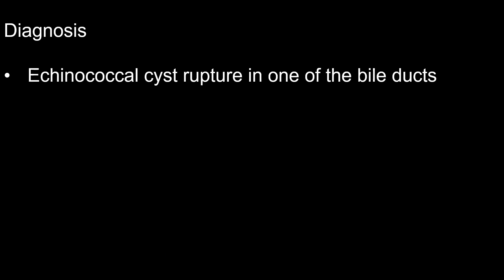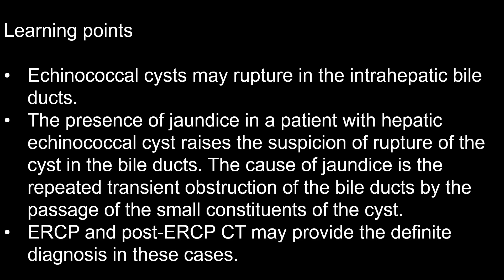The diagnosis is echinococcal cyst rupture into the bile ducts. The learning points are: echinococcal cysts may rupture into the intrahepatic bile ducts; the presence of jaundice in a patient with a hepatic echinococcal cyst raises the suspicion of rupture into the bile ducts; the cause of jaundice is the repeated transient obstruction by passage of small cyst constituents; and ERCP with post-ERCP CT may provide the definitive diagnosis in these cases.